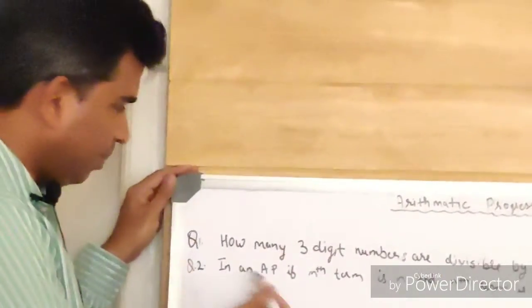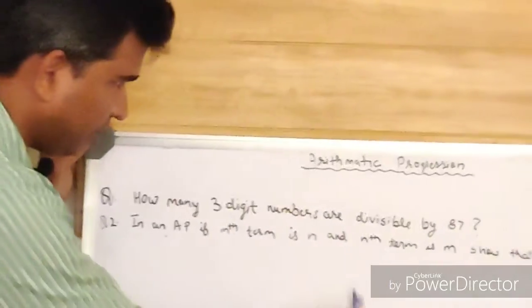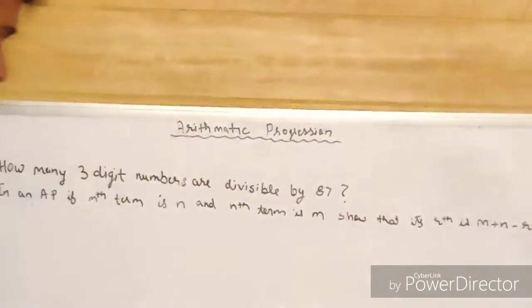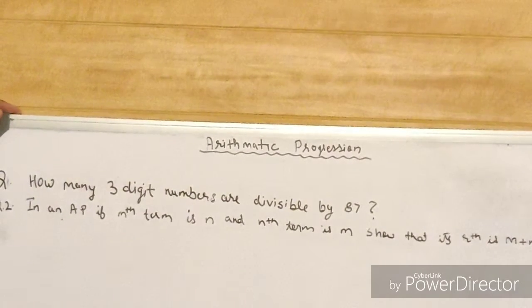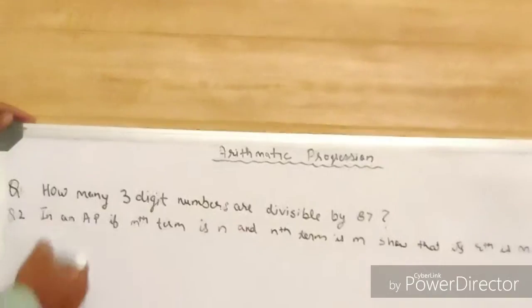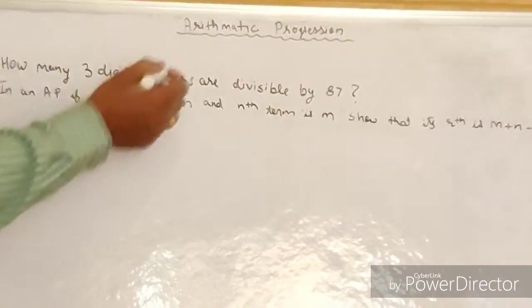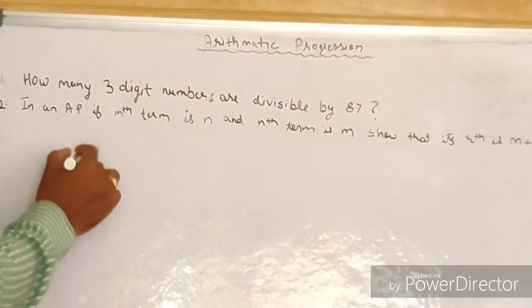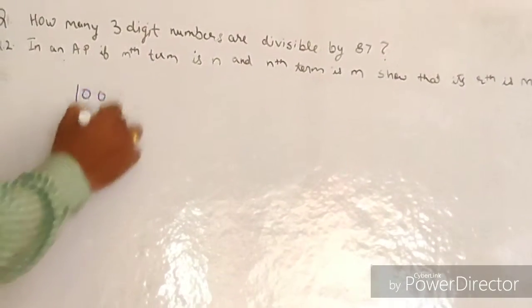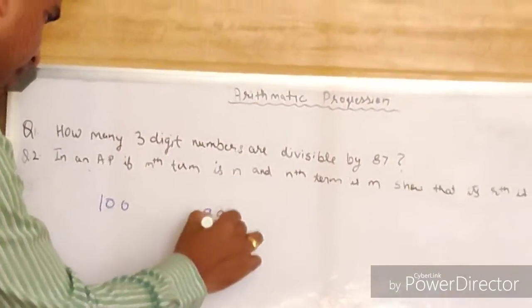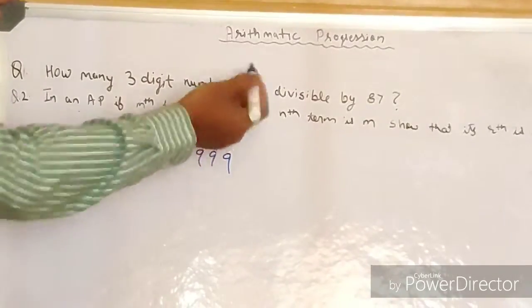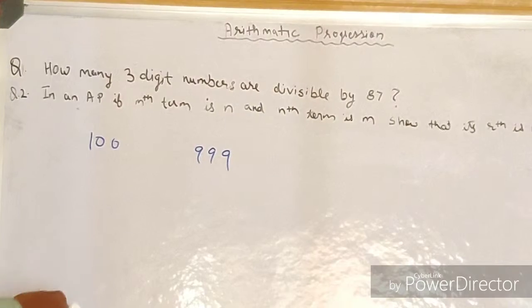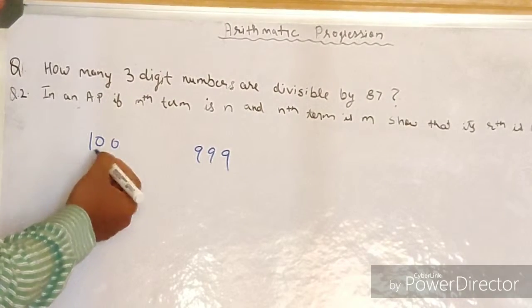Let's get started. I have written down two questions here. First: how many three-digit numbers are divisible by 87? Second: in an AP, if the mth term is n and the nth term is m, show that the rth term is m plus n minus r. Let's see how to solve these problems one by one. For the first question — how many three-digit numbers are divisible by 87 — we need to find numbers divisible by 87 that are three-digit numbers. The minimum three-digit number is 100 and the maximum is 999.